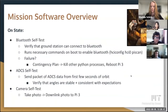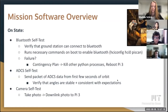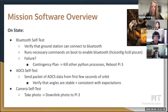Here's the mission software overview. In the on-state there are three self-tests: one for Bluetooth, one for ADCS, and one for camera. The Bluetooth self-test is very important because Bluetooth is integral to the CubeSat mission — everything depends on Bluetooth when communicating between the Pi 4 and Pi 3. The ADCS self-test verifies that angles are stable, calibrated, and consistent with expectations, and keeps track of positional data. The camera self-test takes a photo and downloads it to the Pi 3.